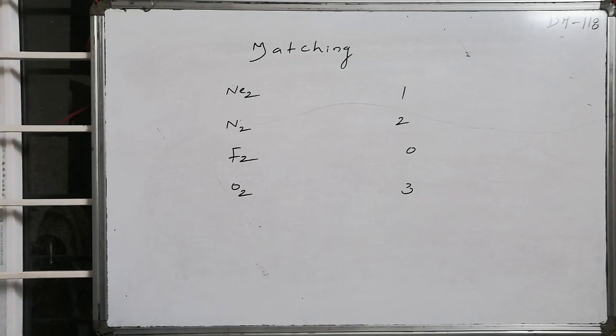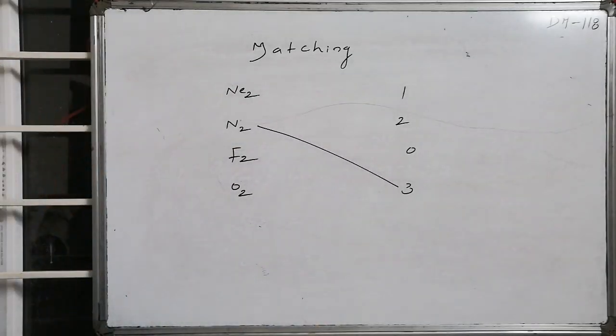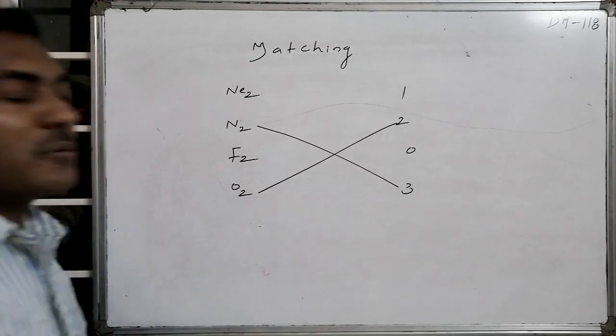We are aware of N2 maintaining a bond order of 3 as a triatomic molecule, whereas O2 is maintaining a bond order of 2.